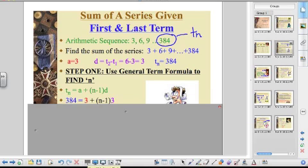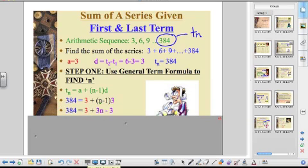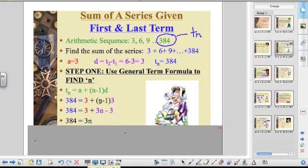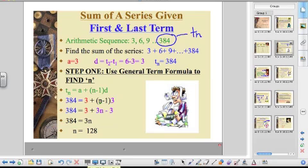I have all this information. I am now going to plug this information into my equation. TN is equal to 384. A is equal to 3 and my common difference is also equal to 3. I am trying to solve for my N variable right here. So first I have to use the distributive property. And when you do that, 3 times N is 3N. 3 times negative 1 is negative 3. So 384 is equal to 3N. If we divide both sides by 3, N is equal to 128. So that is the number of terms in the sequence.